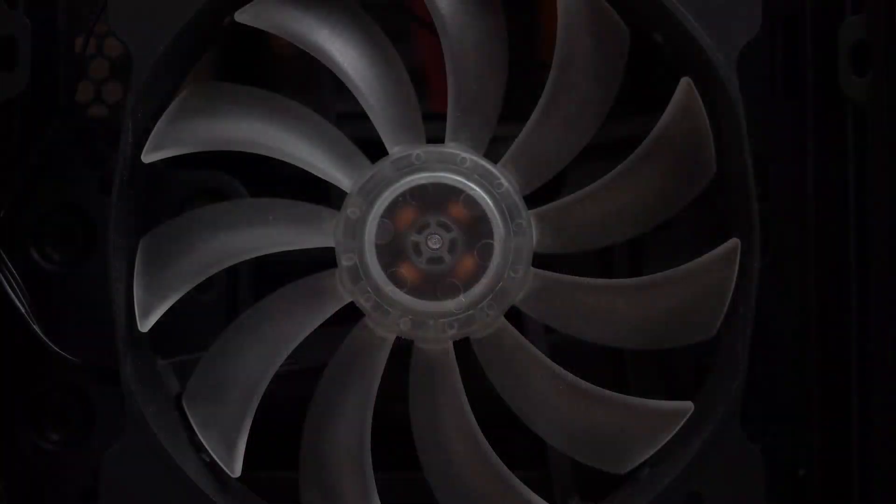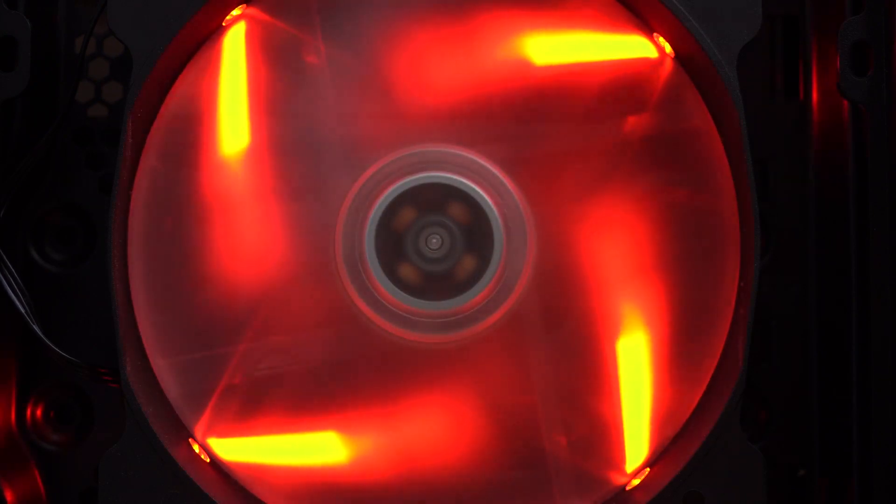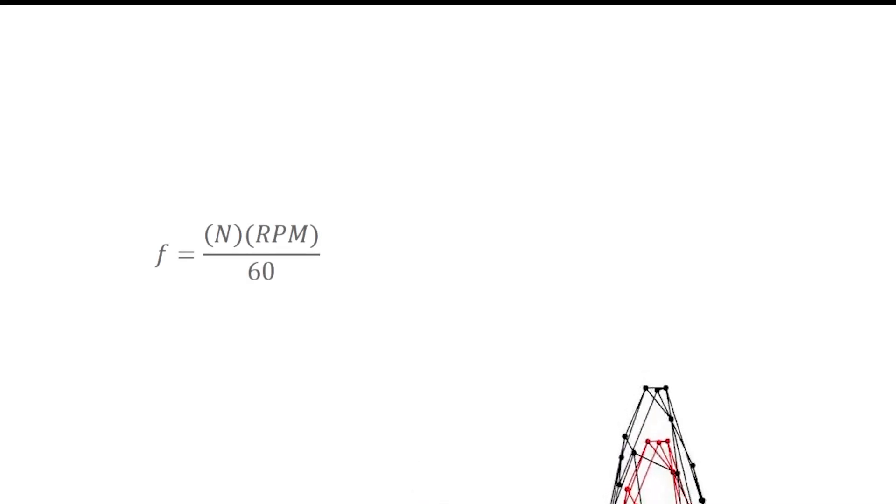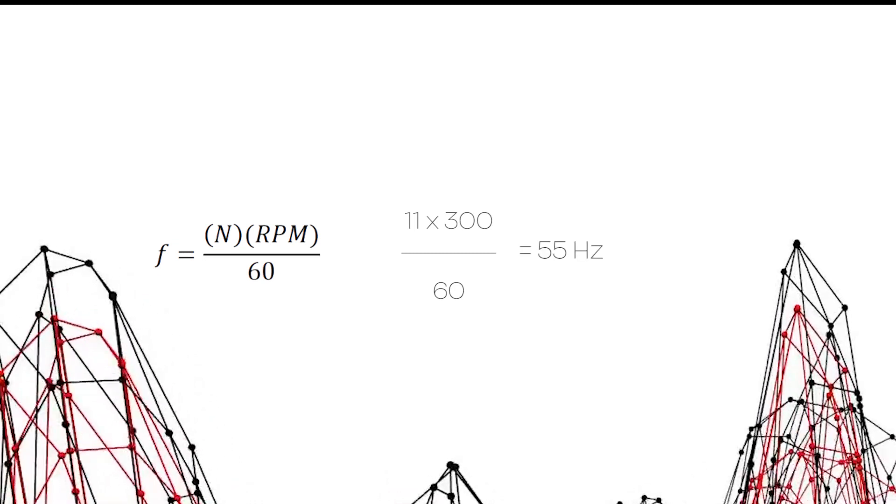In this example, we have a fan with 11 blades. Let's assume this fan is rotating at 300 rotations per minute. The frequency will be 55 Hertz.